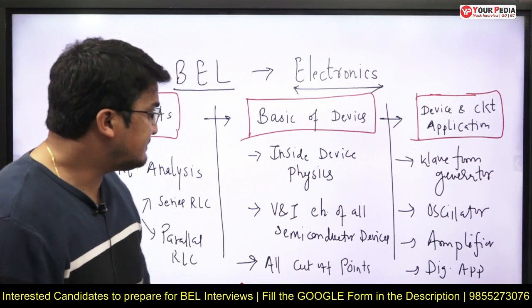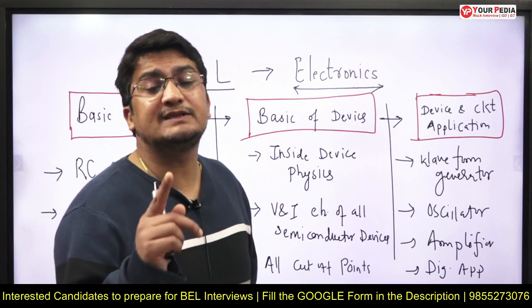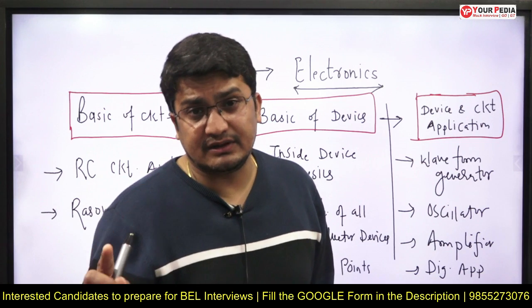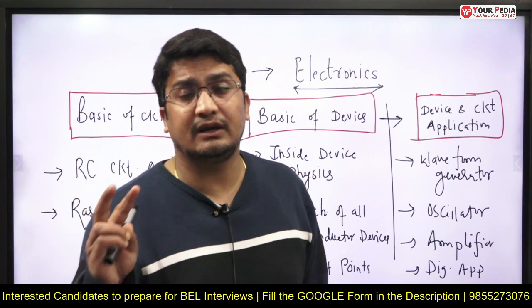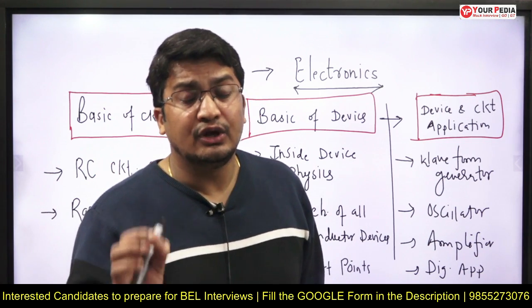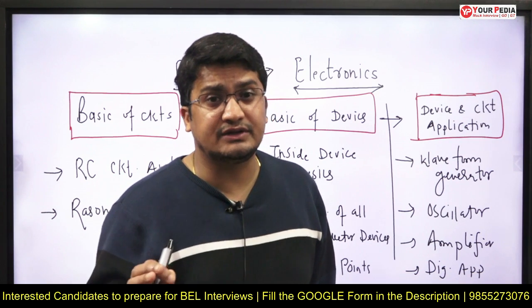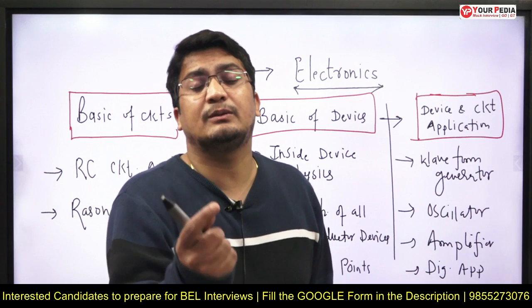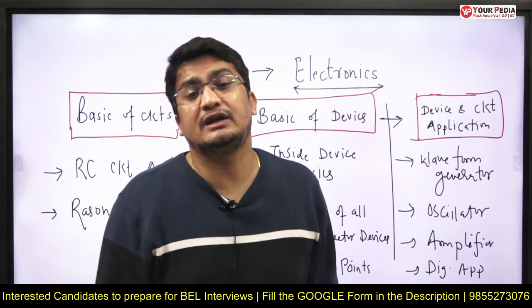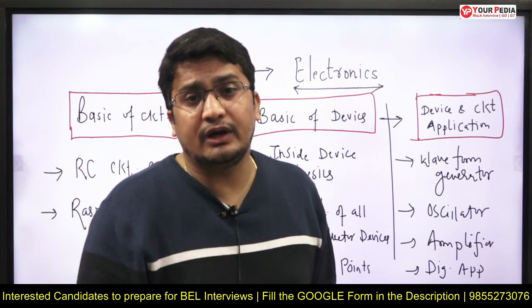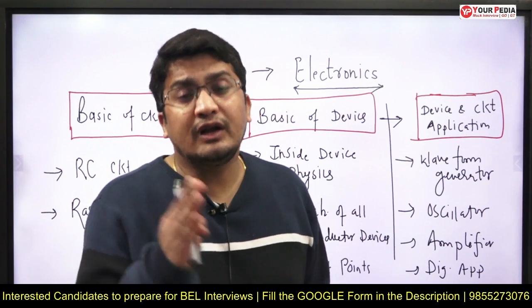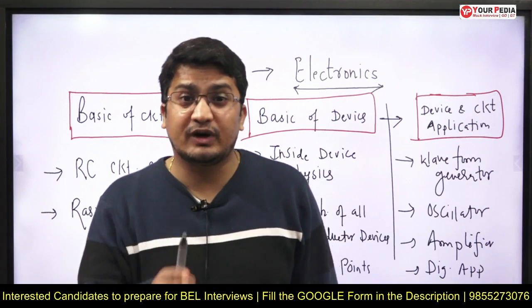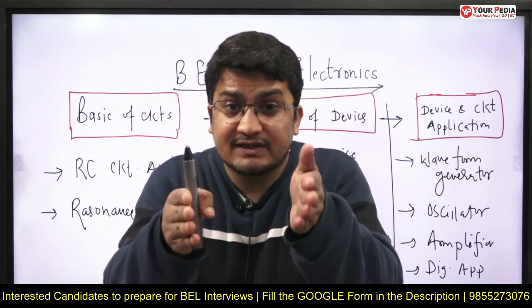Voltage and current characteristics of all semiconductor devices are critical. Take tunnel diode — its V-I characteristics and application. Zener diode, photo diode, LED — each one's V-I application. Second, what kind of material is used for manufacturing? Third, what is the significance of any critical point or threshold on the V-I characteristics? How can it be controlled, minimized, or maximized? What applications do these devices hold in different regions of operation? Keep your preparation focused in this direction.